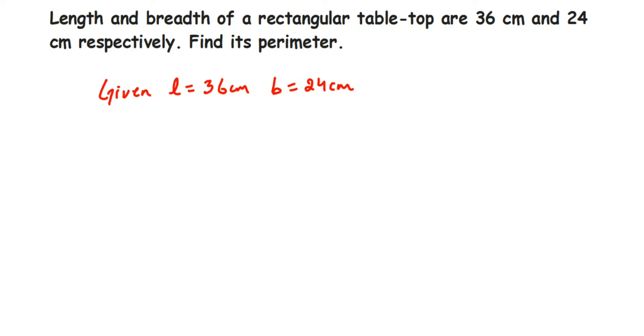We have to find out the perimeter of table top. Now since it is a rectangle, rectangular shape, because length and breadth are different, the table top will be rectangular shape. So perimeter we have to find out is for rectangle.